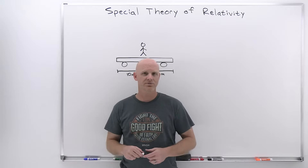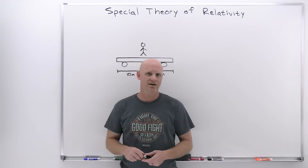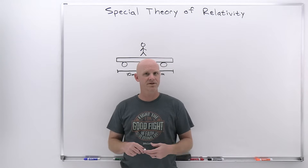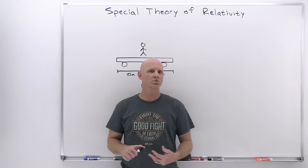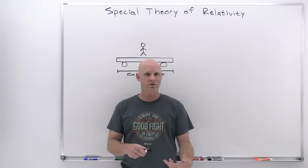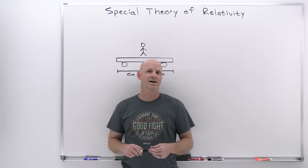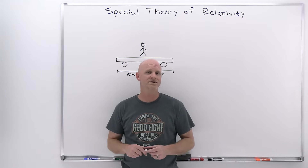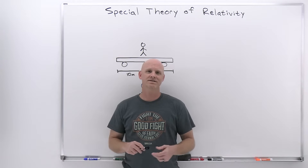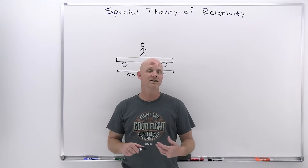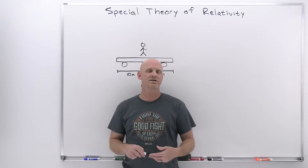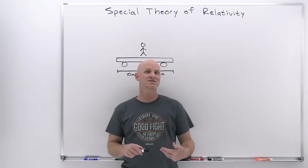The special theory of relativity rests on two main postulates, and at first glance these aren't going to seem earth-shattering, but some of the conclusions and apparent paradoxes that result make it really counterintuitive. It is very different from our everyday experience of the world, and as a result it took a long time for this theory that Einstein proposed in 1905 to gain traction and acceptance with the scientific community.